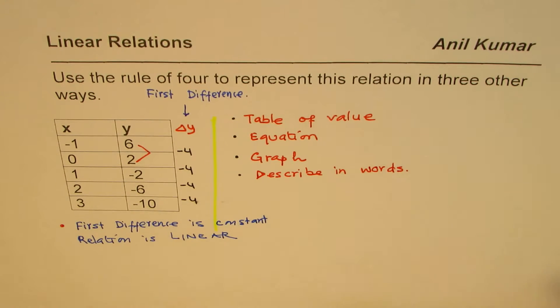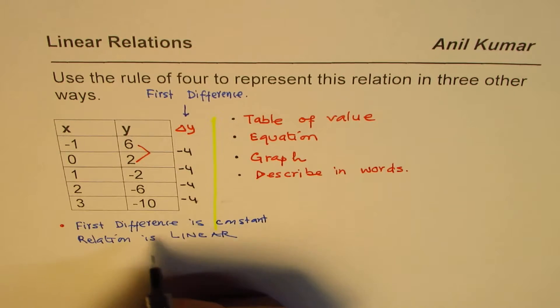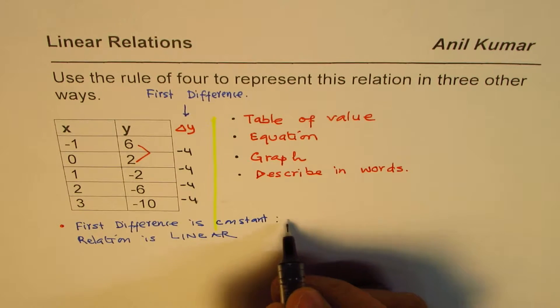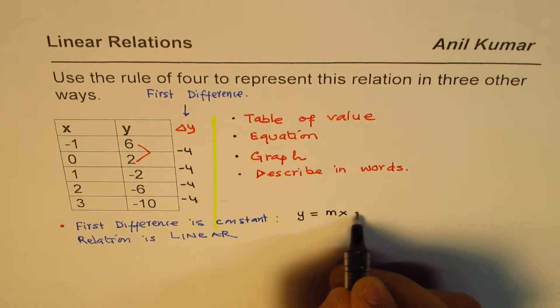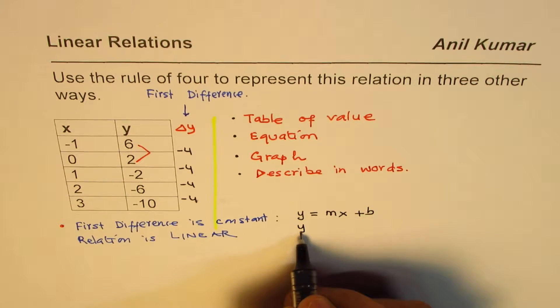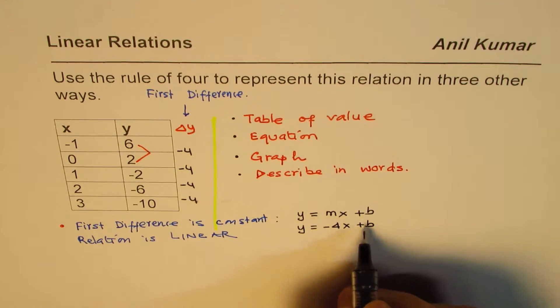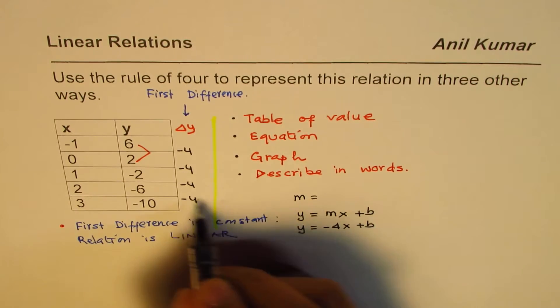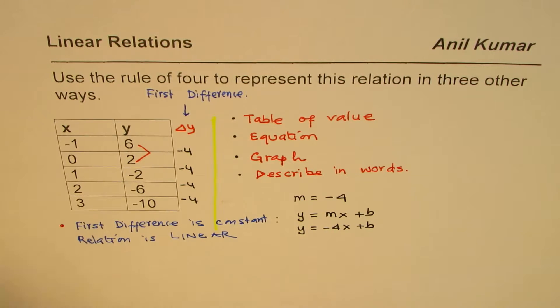Now, linear relations could be written in the form of the line y equals to mx plus b. So, we could write this equation as, let's write down the equation for this linear relation. Now, this linear relation can be represented by equation as y equals to mx plus b, where m is the slope and which is the same as the first difference. So, we can write this as y equals to minus 4x plus b. Since m is equal to minus 4. m is minus 4, the first difference in this case.